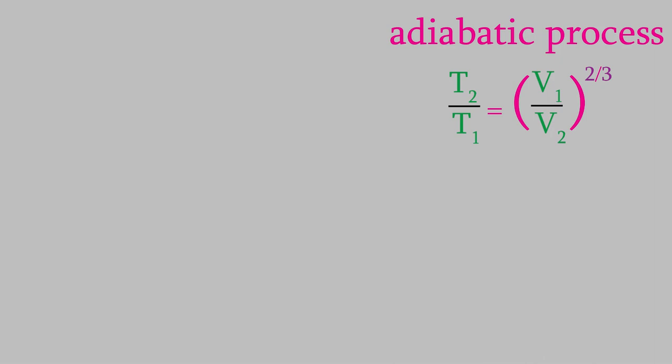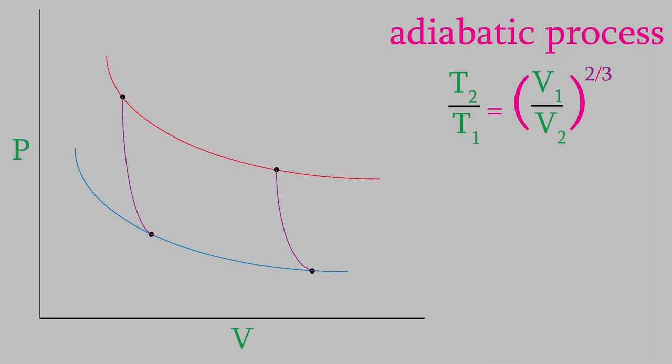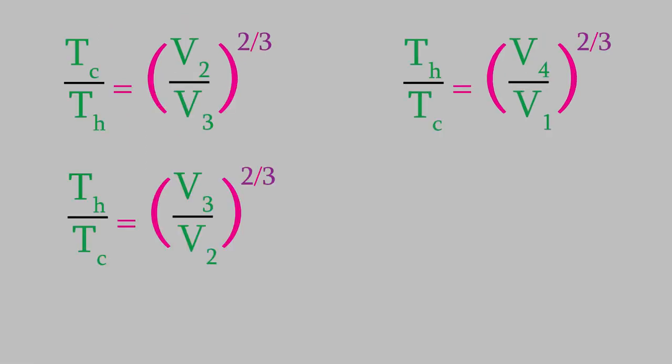You might recall that for an adiabatic process, we have this expression that connects the volume and temperature. So, for example, for the adiabatic process of step two, the final temperature is TC and the initial temperature is TH. Meanwhile, the initial volume is V2 and the final volume is V3. Let's compare that to the adiabatic process in step four. In that process, the final temperature is TH and the initial temperature is TC. Meanwhile, the initial volume is V4 and the final volume is V1. If we compare these relationships for the two different adiabatic processes, we can see that there are some similarities to notice. If we flip the expression for step two, we find that the left side of both expressions is the same. So, we can set the right sides equal to each other.